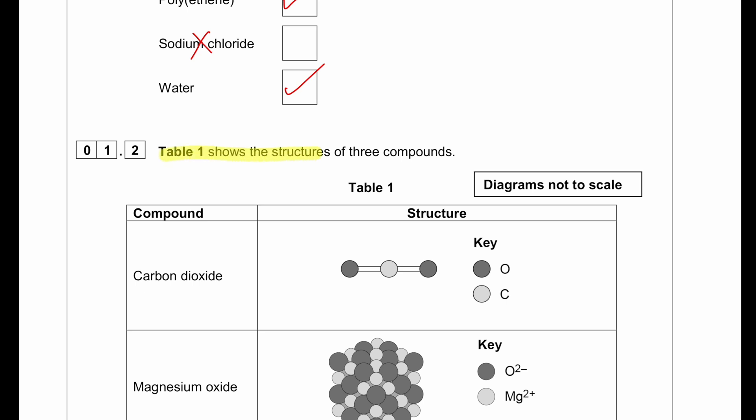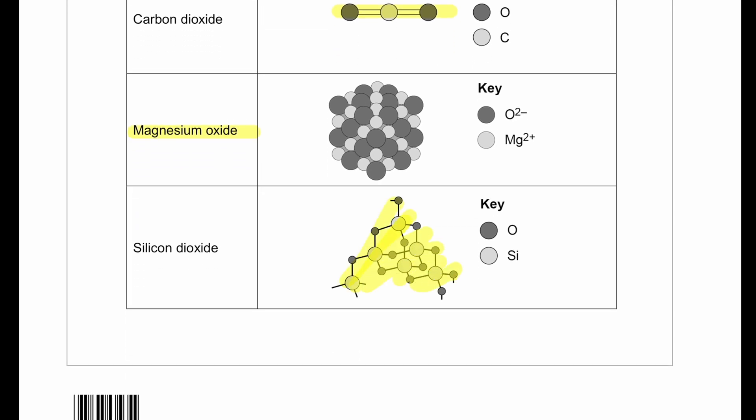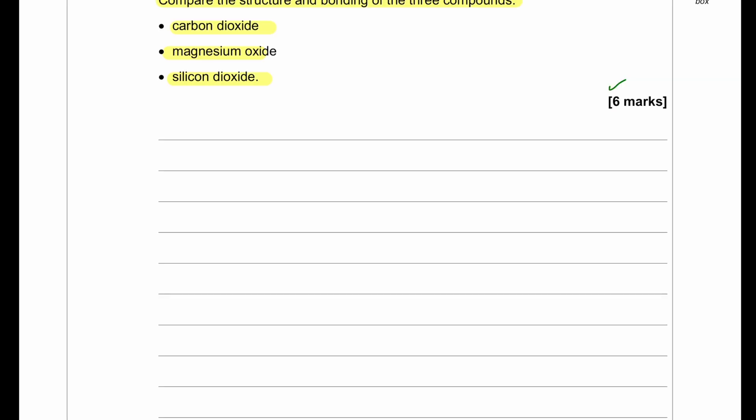Table 1 shows the structure of three compounds: carbon dioxide, magnesium oxide, and silicon dioxide. The question says compare the structure and bonding of these three compounds. In this question, we have six marks. To score the six marks, we can write an answer where we first say that carbon dioxide and silicon dioxide are made of atoms, whereas magnesium oxide is made of ions.